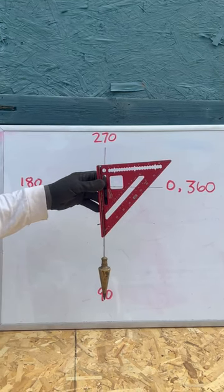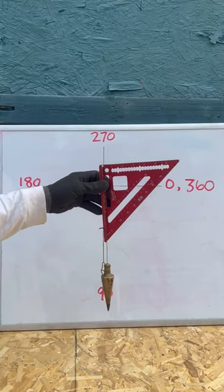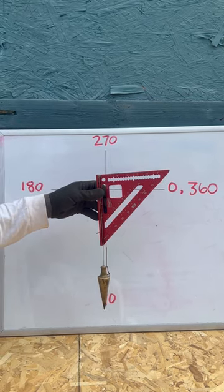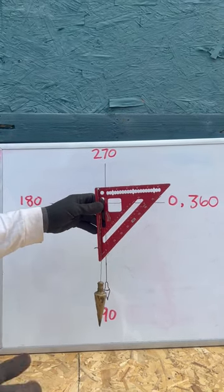Okay Temple Builders, this is part two of finding angles with your plumb bob in tandem with your speed square. Now this is a good exercise to do in order to be able to eyeball angles.